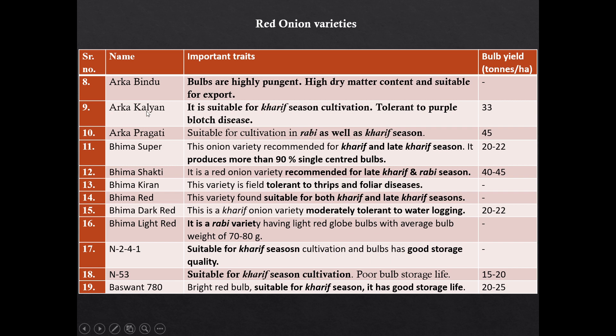Arka Kalyan is suitable for kharif season and is reported moderately resistant to purple blotch disease. Arka Pragati is suitable for both seasons. Hima Super is suitable for kharif and late kharif season and produces more than 90 percent single central bulb. Hima Shakti is recommended for late kharif and rabi season. Bhima Kiran is tolerant to thrips and foliar diseases. Bhima Red is suitable for kharif and late kharif season. Bhima Dark Red is moderately tolerant to waterlogging. Bhima Light Red is a rabi variety. N241 is suitable for kharif season and has good keeping quality. N53 is suitable for kharif season but the bulb has poor keeping quality. Bhima 780 is for kharif season and has good keeping quality.